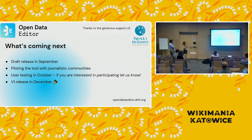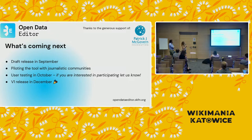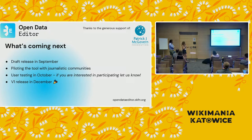We're going to pilot the tool with some journalistic communities we've identified, really integrating it into their data workflow over a longer period so they can tell us what worked and what didn't. We also want to run shorter user testing in October — if you're interested in participating, let us know, there's a small token available. Then in December we release version one. All of this is possible thanks to the general support of the McAvon Foundation.